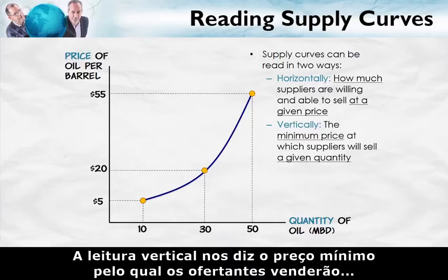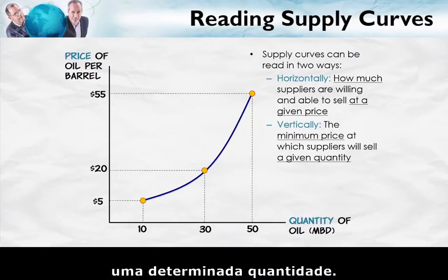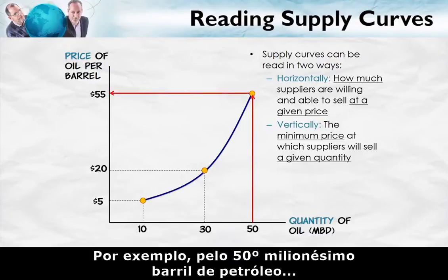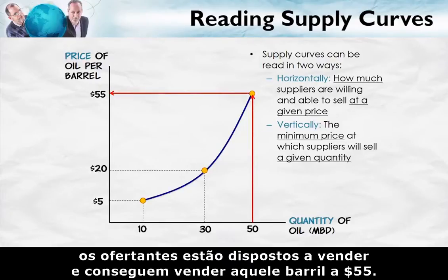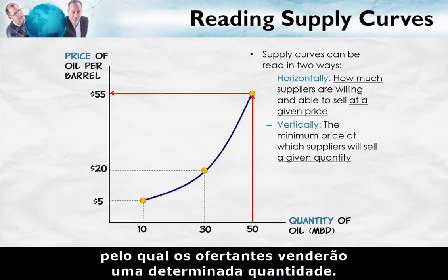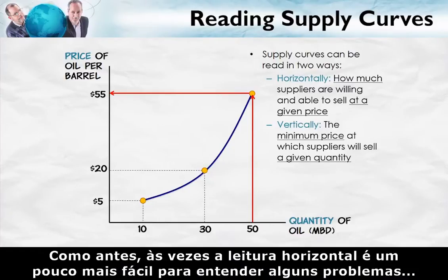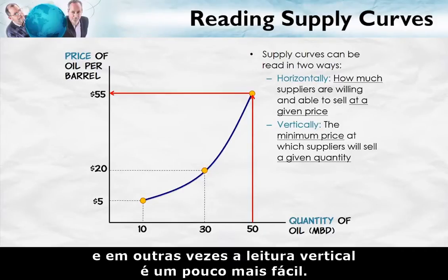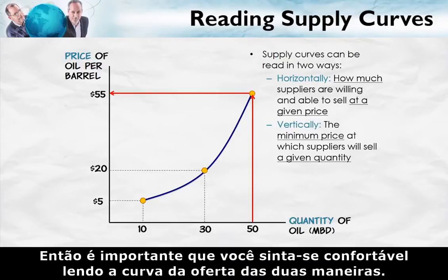The vertical reading tells us the minimum price at which suppliers will sell a given quantity. For example, for the 50th millionth barrel of oil, suppliers are willing and able to sell that barrel for $55. So it's important that you be comfortable reading the supply curve in both ways — sometimes the horizontal reading is a little bit easier, other times the vertical reading is a little bit easier.